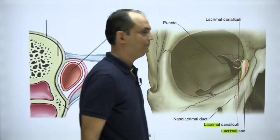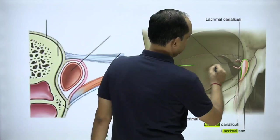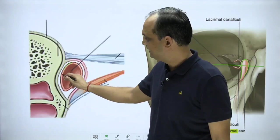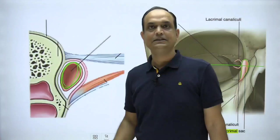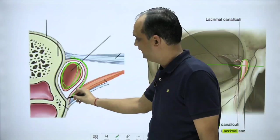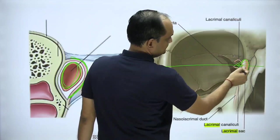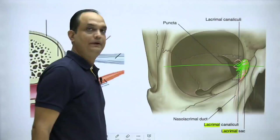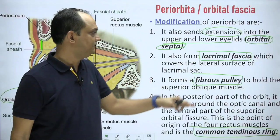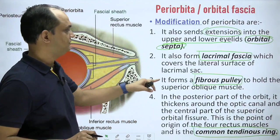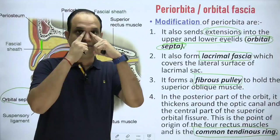If you take a section of the orbit in the horizontal plane, you can see the lacrimal sac. This sac lies between the anterior and posterior lacrimal crest, and this fascia covers the lateral surface of the lacrimal sac. So in the modification known as lacrimal fascia, it covers the lateral surface of the lacrimal sac. The next modification is the fibrous pulley, present in the trochlear fovea.